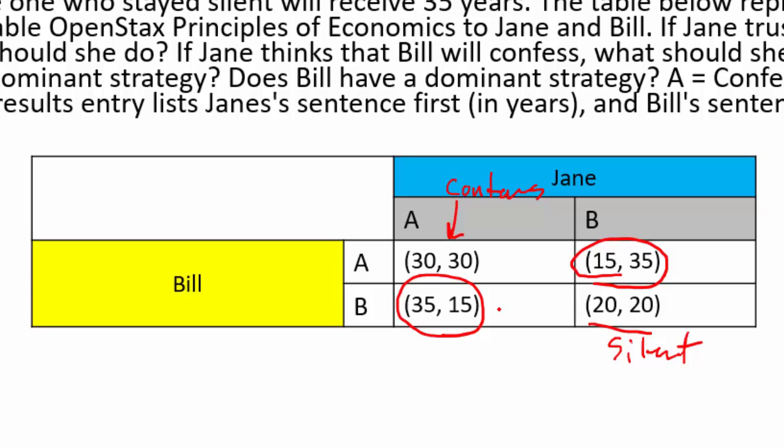If Jane thinks that Bill will confess, what should she do? She should also confess, because if she stayed silent she'd get five more years. Does Jane have a dominant strategy? Yes — her dominant strategy is to confess. Does Bill have a dominant strategy? Yes, also to confess. So both of them are going to confess, and neither is going to stay silent.